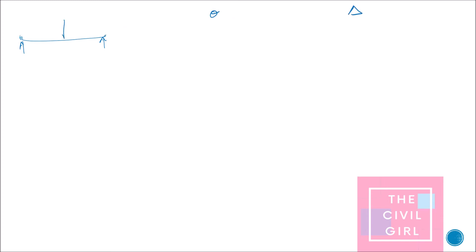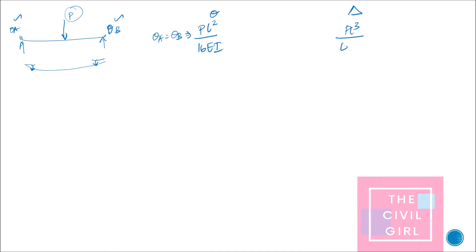The next type of beam is a simply supported beam. At both ends we will have slope. If it is subjected to a point load P at the center, the deflected shape will show slope at both ends — theta A and theta B — which are equal in magnitude but opposite in direction. The magnitude of theta A equals theta B, which is equal to PL² divided by 16EI. The maximum deflection is PL³ divided by 48EI.